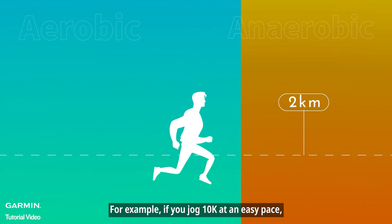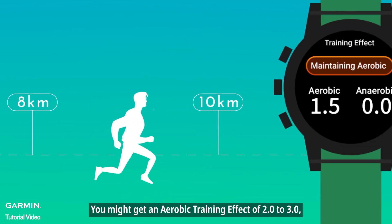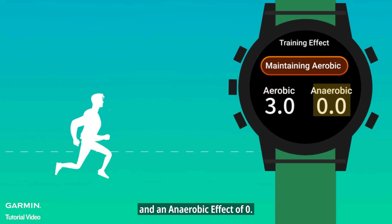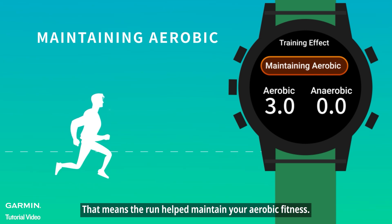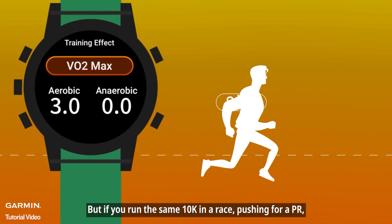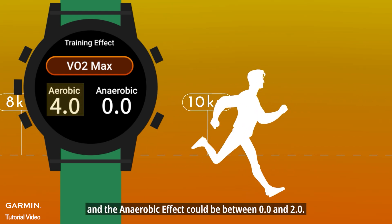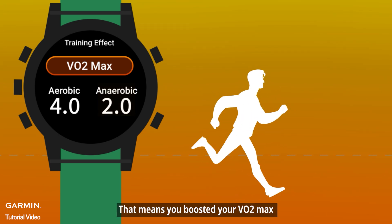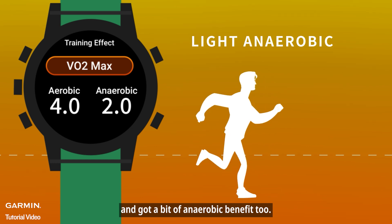For example, if you jog 10k at an easy pace, you might get an aerobic training effect of 2.0 to 3.0 and an anaerobic effect of 0.0 — meaning the run helped maintain your aerobic fitness. But if you run the same 10k in a race, pushing for a PR, your aerobic effect might go over 4.0 and the anaerobic effect could be between 0.0 and 2.0, meaning you boosted your VO2 max and got a bit of anaerobic benefit too.